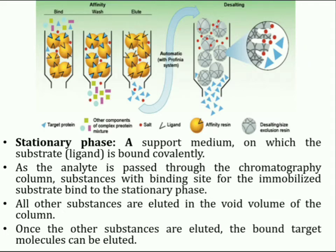In the chromatography procedure, when the analyte, which is a crude mixture of substances, is passed through the chromatography column, substances with binding sites for the immobilized substrate bind to the stationary phase, while all other substances are eluted in the void volume of the column. Once the other substances are eluted, the bound target molecule can be eluted by the use of a competing ligand in the mobile phase or by change of pH, ionic strength, or polarity conditions of the solvent used.